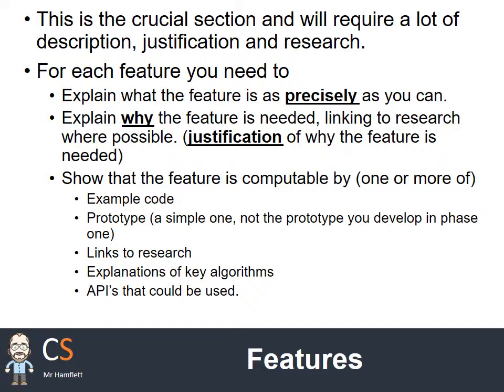For every single feature you need to explain what the feature is as precisely as you can, and explain why it's needed, giving as much justification as you can, linking back to research if possible, and then most importantly explain that the feature is computable. Some examples of how you could show a feature is computable: finding example code, doing little prototypes of your own, linking back to research websites, and explanations of key algorithms and APIs used to implement it.